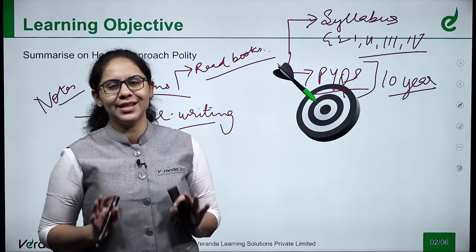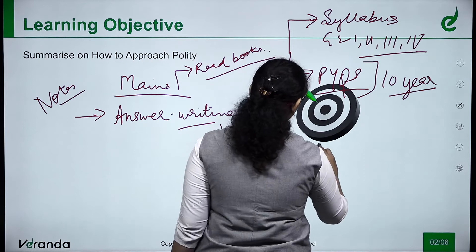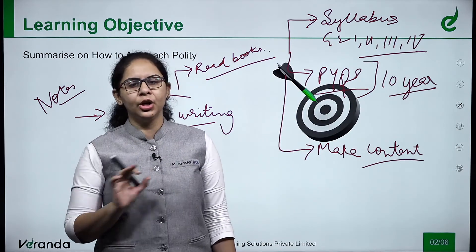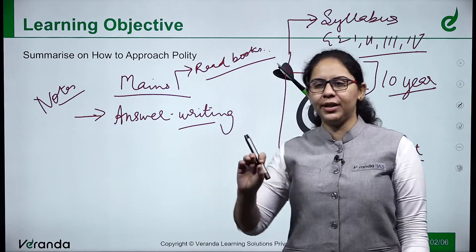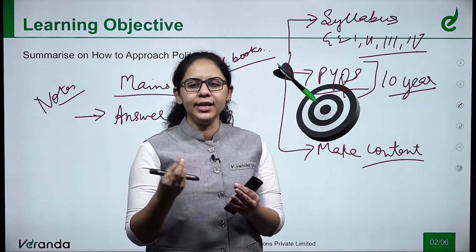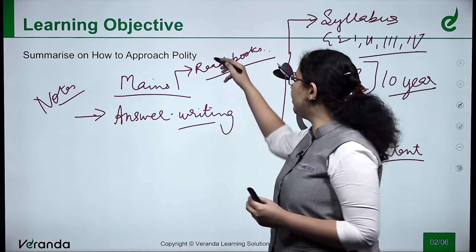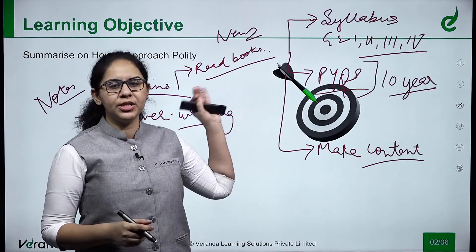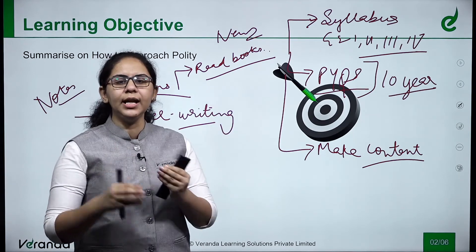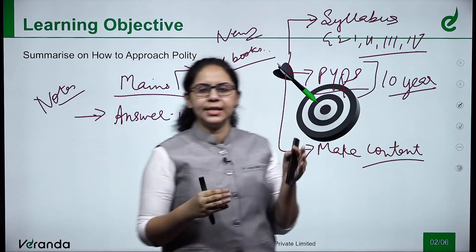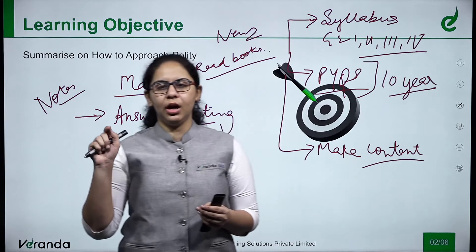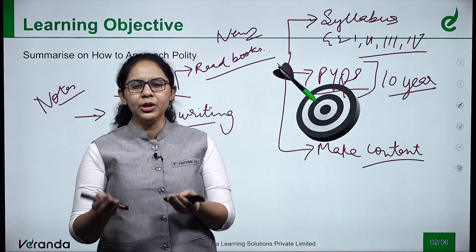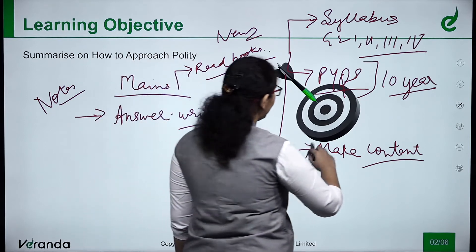After this, you have to make content — prepare the content topic-wise. I suggest you prepare content topic-wise for mains. Take the topic, prepare the content using your Veranda IAS handouts or any material. If you find important information in the news, your approach should be: for example, here we covered Panchayati Raj institutions, and if there is a news article about it, immediately go to your handouts and update it there. When you are revising before your mains, it will be easier to cover the current affairs of the whole year along with the topic.